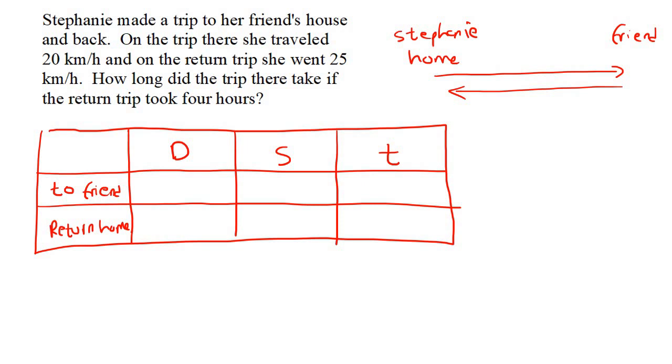So it says on the trip there, she traveled 20 kilometers per hour. So that's her speed on the way there. And on the return trip, she went 25 kilometers per hour. How long did the trip there take if the return trip is four hours? So the return trip is four hours.